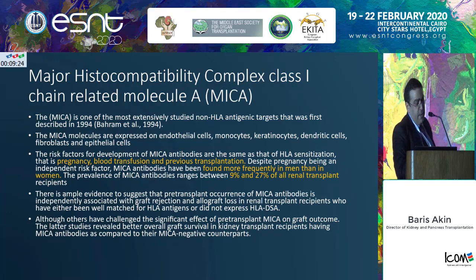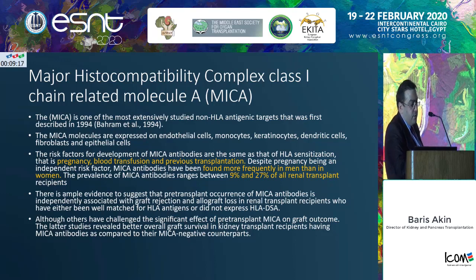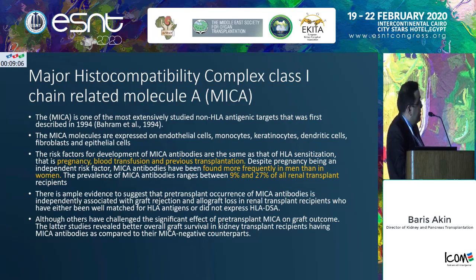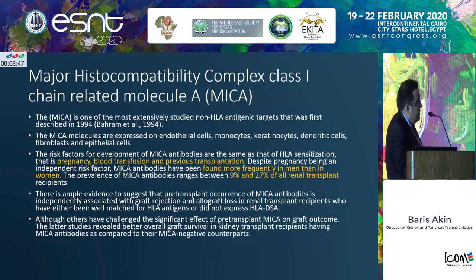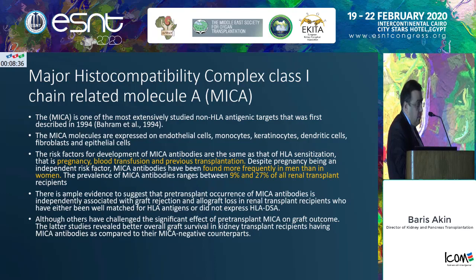Talking about MICA — this is the most well-known non-HLA antibody. MICA, the Major Histocompatibility Complex Class 1 Chain-Related Molecule A, is expressed on endothelial cells, monocytes, dendritic cells, fibroblasts, and epithelial cells. Just like how you get sensitized to HLA, you can get sensitized to MICA as well. In renal transplant recipients, 9% to 27% of patients have MICA antibodies. However, most studies have shown that the direct clinical correlation between MICA antibodies and clinical outcome is not very clear, so further evaluation is still needed.